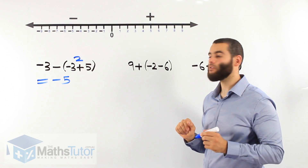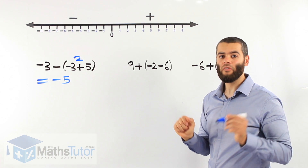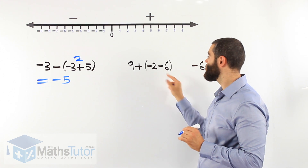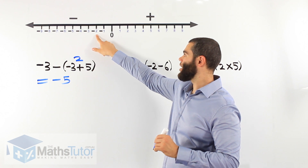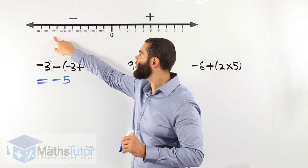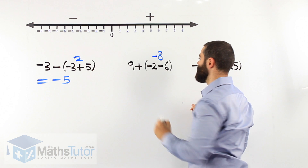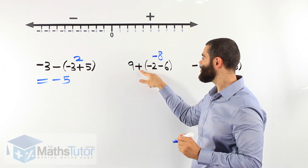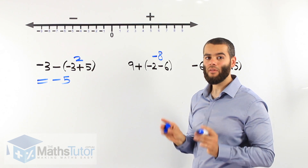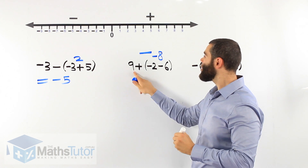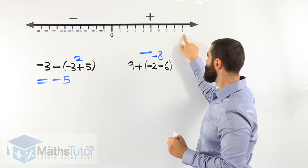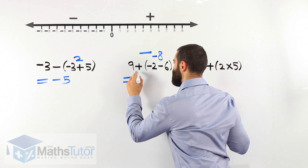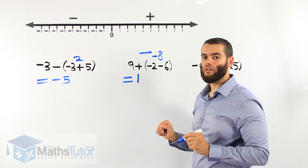Next: 9 plus, in brackets, negative 2 minus 6. We follow order of operations and do the brackets first. Negative 2 minus 6: we start at negative 2 and go left 6 steps — 1, 2, 3, 4, 5, 6 — giving us negative 8. Then we have 9 plus negative 8. Plus and minus next to each other — they don't like one another, minus wins. So it's 9 take away 8: 1, 2, 3, 4, 5, 6, 7, 8. Our answer is 1.